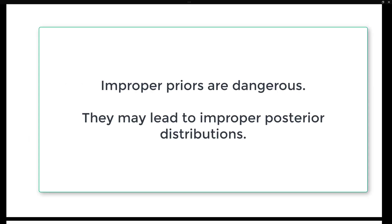Our goal is to derive the posterior distribution for theta. If you're familiar with conjugate priors, you may be tempted to simply take the product of the data density and the prior density and determine if the kernel for theta looks like a known density. We should not do that here. That technique is only appropriate when the prior distribution is a proper statistical distribution, which is not the case here. We cannot guarantee that an improper prior will lead to a valid posterior distribution. Because of this, I don't recommend improper priors. A sufficiently vague proper prior should be available.